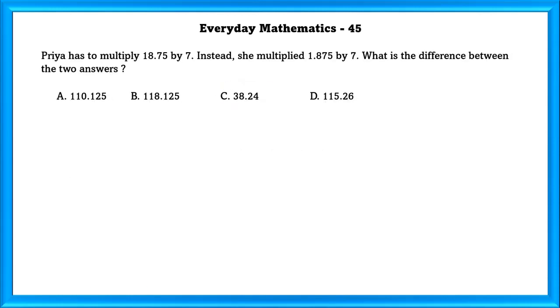Everyday Mathematics Question Number 45: Priya has to multiply 18.75 by 5. Instead, she multiplied 1.875 by 7. What is the difference between the two answers?